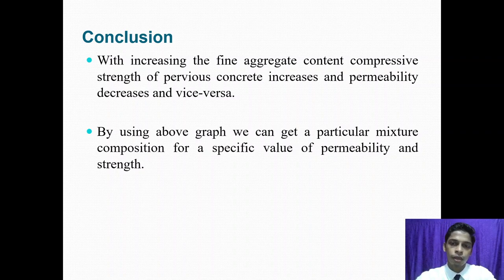Conclusion. Here we conclude that the angularity number, total void content, and permeability decrease with increase in fine aggregate percentage, and vice versa. Similarly, characteristic strength increases with increase in fine aggregate percentage, and vice versa. Above graph can be used for determining the required composition of concrete.